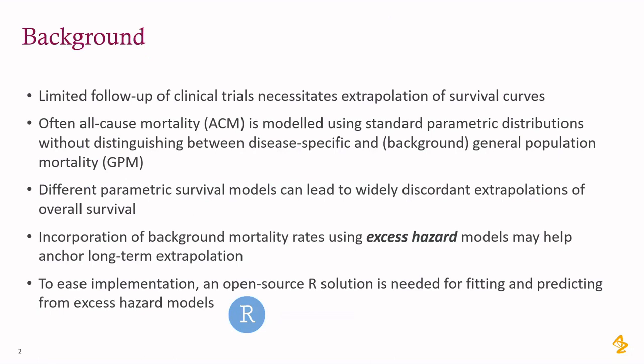The background probably doesn't need too much detail. I'm talking about the setting, maybe when we have a cancer clinical trial, and we might have an overall survival curve that we want to extrapolate. Often the all-cause mortality is modeled using standard parametric distributions, and then those are used to extrapolate into the future to the time horizon of interest. The problem with that, of course, is that we get widely discordant extrapolations depending on which parametric survival model we choose. But can we do better? Can we actually incorporate background mortality rates into the actual estimation of our parametric model?